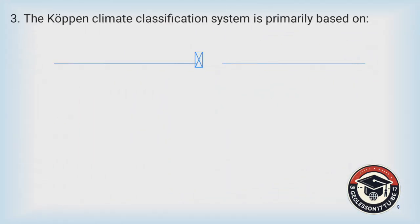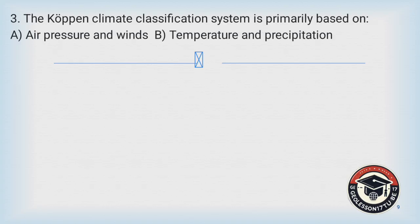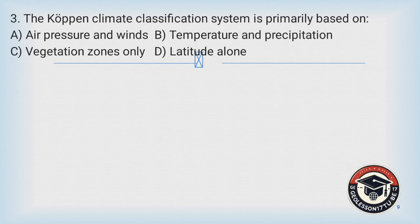Question number three: Koppen's climate classification system is primarily based on: A) air pressure and winds, B) temperature and precipitation, C) vegetation zone only, D) latitude and land.